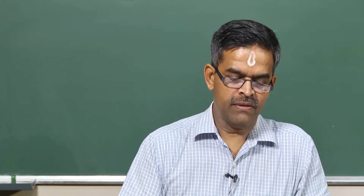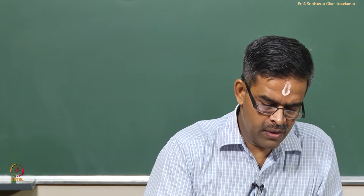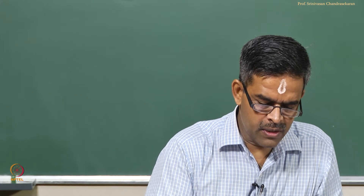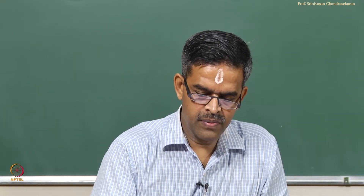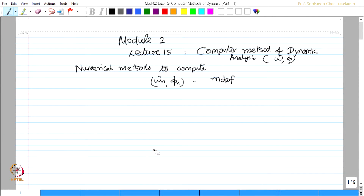Friends, welcome to the 15th lecture in module 2. In the previous lectures we discussed about different numerical methods to compute the natural frequency and mode shape of a multi degree freedom system. In this lecture we will explain how a computer code is written to estimate the natural frequency and mode shape.